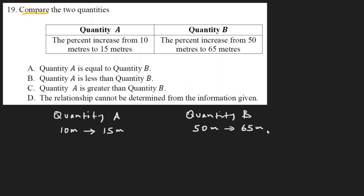For both quantity A and quantity B, we need to calculate the percentage increase. Let's take an example to understand how to calculate the percentage. You take the difference of the two values and use it in the formula. Here, from 10 to 15, the increase is 5.